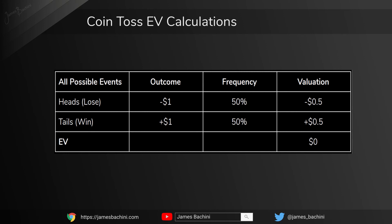To wrap up: EV, or expected value, is a calculation of the average outcome of future events. It can be calculated by multiplying the possible return of each outcome by the chance of that outcome happening. For a coin toss where there's a 50-50 chance of winning or losing $1, the calculation would be: minus 1 times 50% plus plus 1 times 50% equals 0 EV.